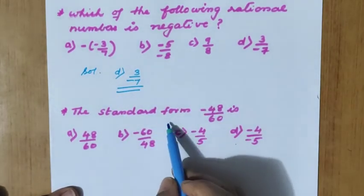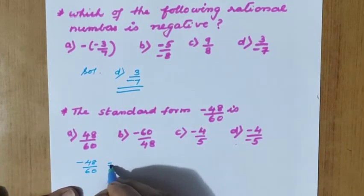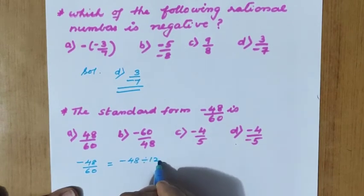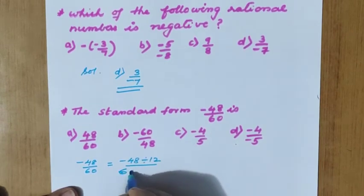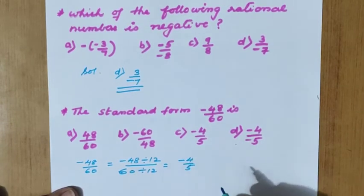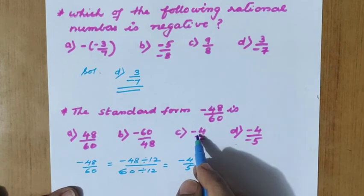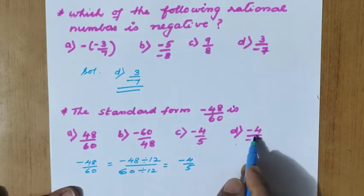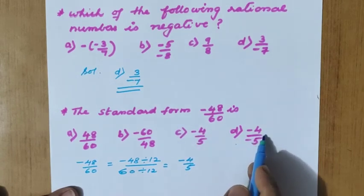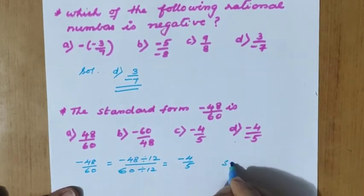Second question: Find the standard form of minus 48 by 60. We identify the common factor — dividing both minus 48 and 60 by 12 gives minus 4 by 5. We check that the denominator has no negative sign. The answer is minus 4 by 5, which is option C.